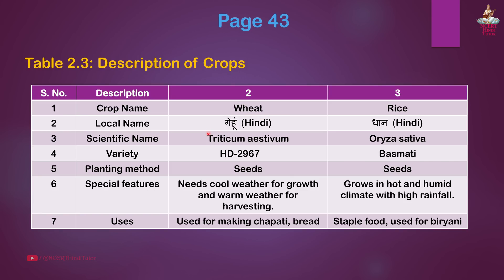Second crop: Wheat. Local name: Gehu in Hindi. Scientific name: Triticum aestivum. Variety: HD2967. Planting method: Seeds. Special features: Needs cool weather for growth and warm weather for harvesting. Uses: Used for making chapati and bread.